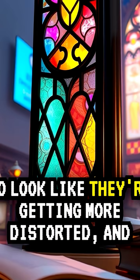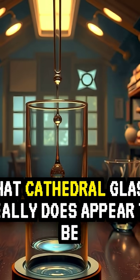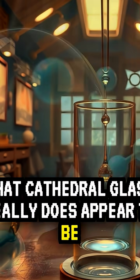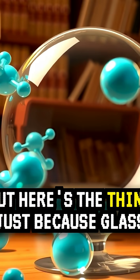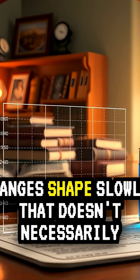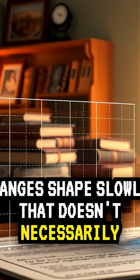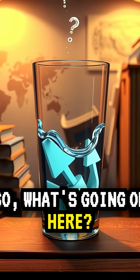Those old windows do look like they're getting more distorted, and that cathedral glass really does appear to be flowing. But here's the thing, just because glass changes shape slowly doesn't necessarily mean it's a liquid. So what's going on here?